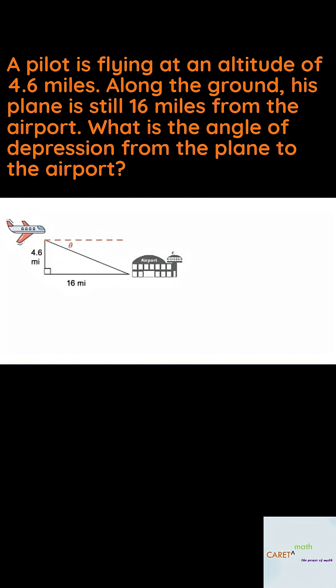Remember my angle of depression? I got my horizontal line of sight, and then looking down at, in this case, my airport, that forms my angle of depression. Remember it is the same as my angle of elevation. So I do want to have my angle inside my triangle before I figure out which trig ratio I need to use.